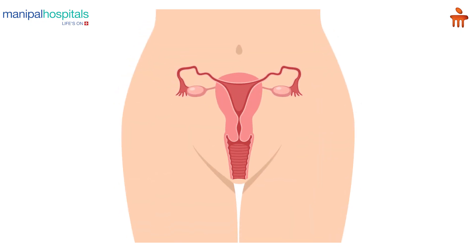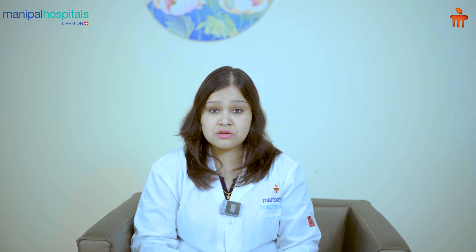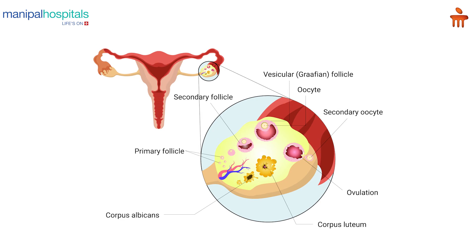Some women are born with a larger number of eggs to begin with and lose them gradually as the years progress. However, some women lose their eggs very quickly. AMH is a hormone which is released from the cells which surround the eggs, from a structure called the follicle, which is usually seen in ultrasound scans.